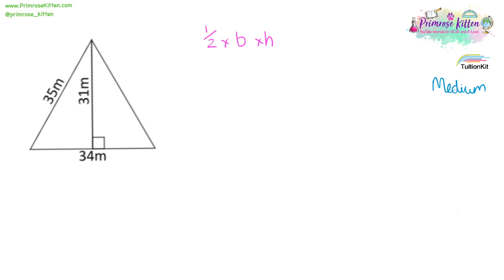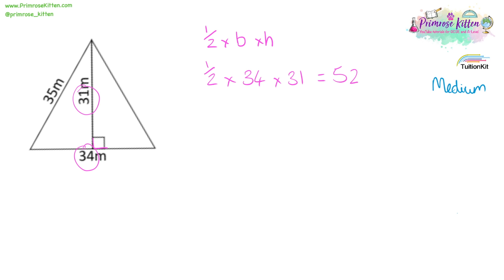Same equation, half times base times height. Here is our right angle — we need this number and we need this number. A half times 34 times 31 equals 527 metres squared.